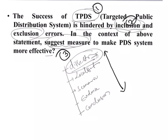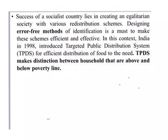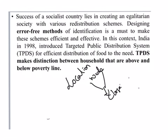The question says the success of TPDS is hindered by inclusion and exclusion errors. For the introduction we follow a localization technique — we should not jump into the actual part of the question immediately. In the initial lines we have to move from a wide angle to a close-up. Here we speak about a socialist country's success — any socialist country's goal of creating an egalitarian society can be attained through redistribution schemes, and those redistribution schemes should be error-free.